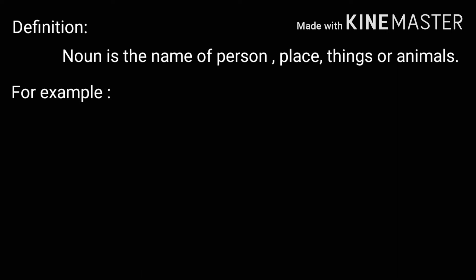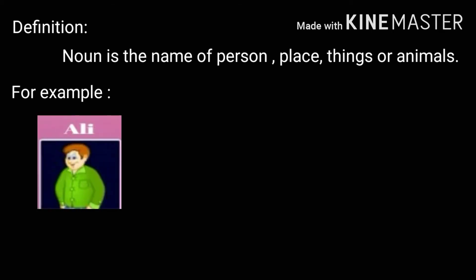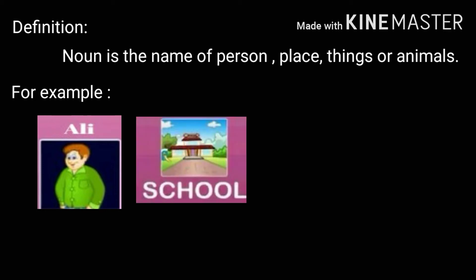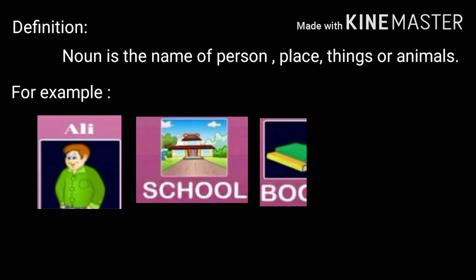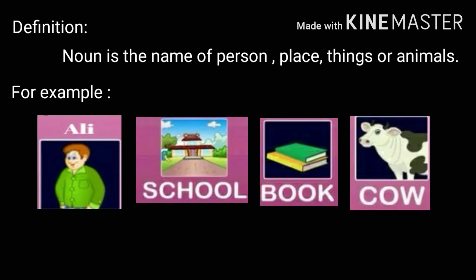Now make a heading 'For Example.' Write Ali — Ali kya hai? Person. Write School — School kya hai? Place. Write Book — Book kya hai? Thing. Write Cow — Cow kya hai? Animal.